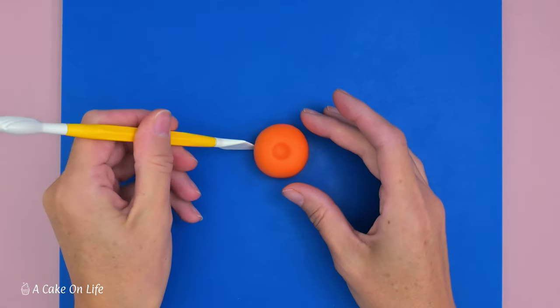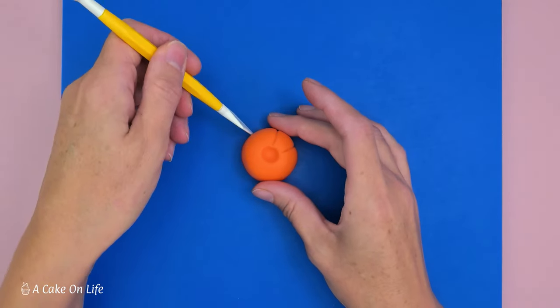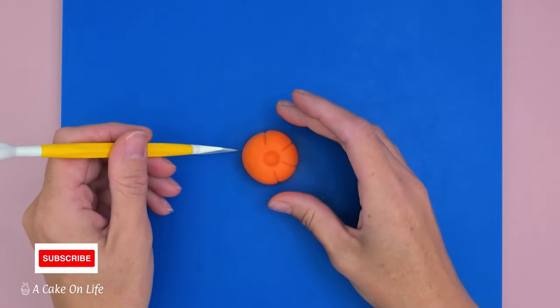So now I've just got my blade tool, I'm just going to go around the outside of the pumpkin just to score some lines. This is for the texture. It doesn't matter where you go because no pumpkin is perfect or has equal spacings.